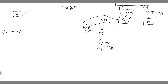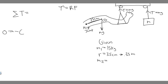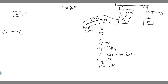M1 is 15 kg and its radius is 35 centimeters, which is 0.35 meters. The second mass, m2, is the mass we don't know — that's what we're solving for. The radius for m2 is 78 centimeters from the hip joint, which is 0.78 meters.